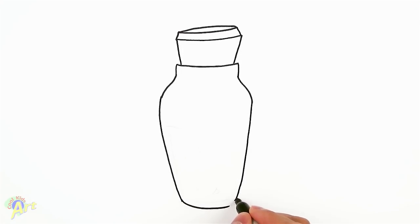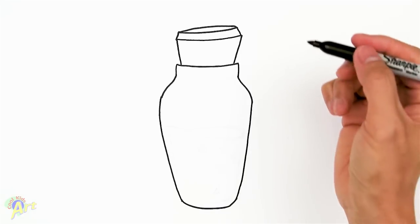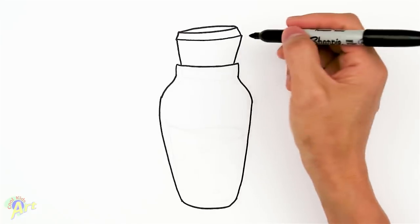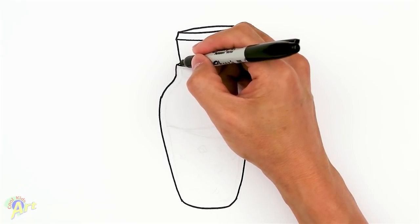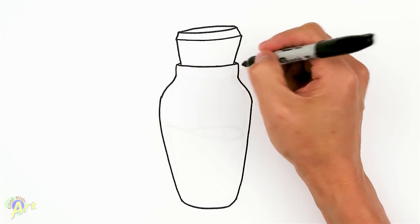Just kind of curve it and connect that. That's going to be the bottle. Now to make it look like glass, let's finish up this edge right here. Forgot to just do the opposite edge of that curve.